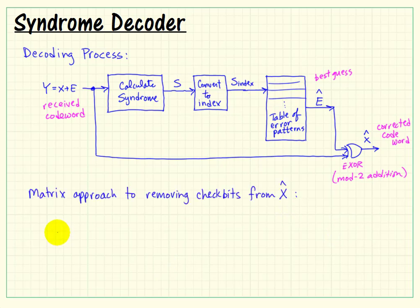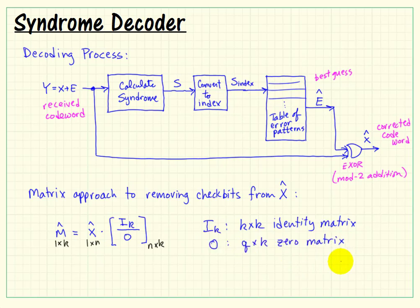Now another thing that you might want to consider is how to actually remove the check bits from our corrected codeword. So I'll say m-hat is our best estimate of the original transmitted message. If we do an array multiplication between x-hat and a specially designed matrix here, which is the identity matrix stacked on top of the zero matrix. This matrix needs to be n by k. So the identity matrix picks off the message portion and the zero portion of the matrix essentially eliminates the check bits. And we're left with a 1 by k vector result.